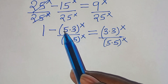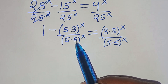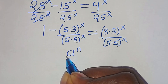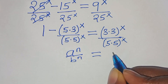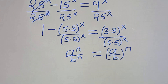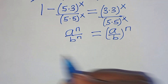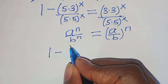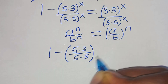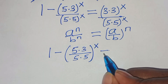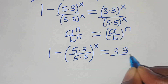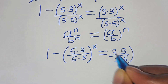The next step: 5 times 3 raised to the power of x over 5 times 5 to the power of x is in the form of a^n over b^n, which can be expressed as (a/b)^n. Applying this exponent property, we have 1 minus (5×3)/(5×5) raised to the power of x, equal to (3×3)/(5×5) raised to the power of x.